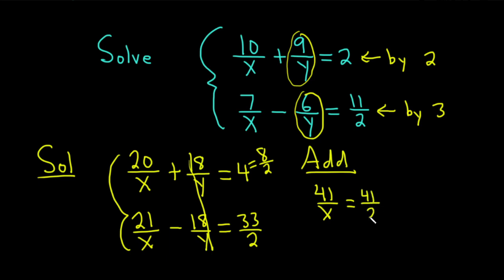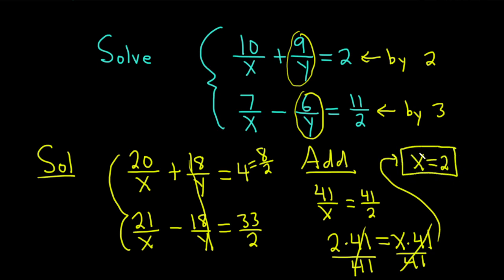And then, so now we're in a really good place, right? We can basically cross-multiply. We get 2 times 41 equals x times 41. We can divide away the 41s. And so we get x equals 2. Very nice. I'm going to put that in a box because that is a huge accomplishment.